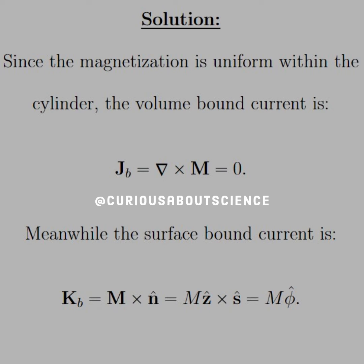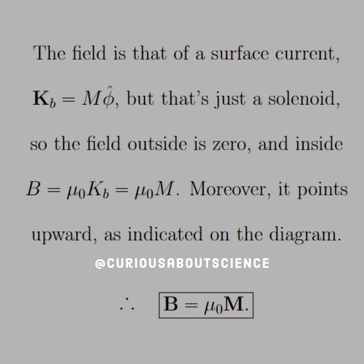But the surface bound current is not zero. If we put in the unit vectors, we have M ẑ cross ŝ, which in cylindrical coordinates equals M φ̂. The field is that of the surface current K_B equal to M φ̂ — but that's just a solenoid.